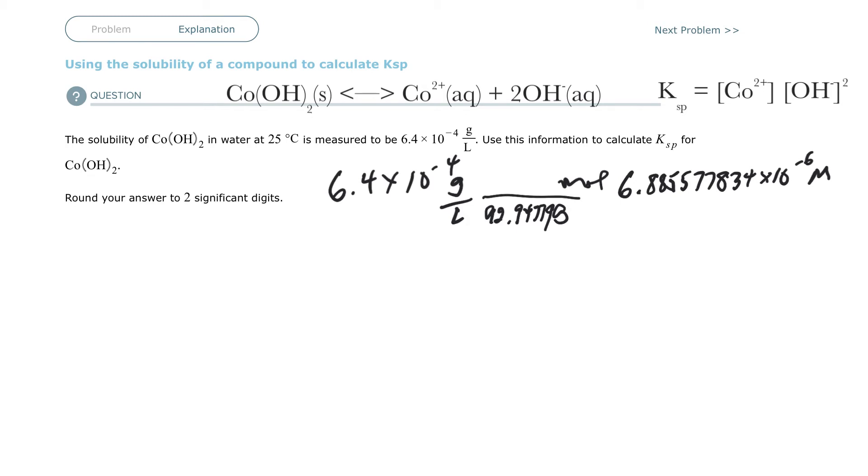Well, the balanced equation tells me that it's 1 to 1 cobalt. That means that my cobalt is going to have that same concentration. So the concentration of the cobalt is also going to be the same, 6.88558. I don't have to round that far, I'll round that off later.